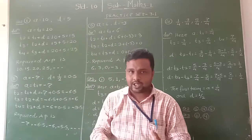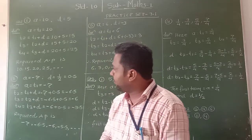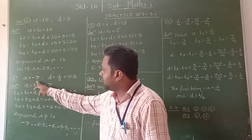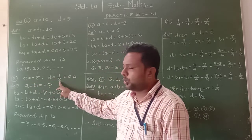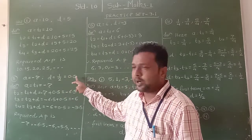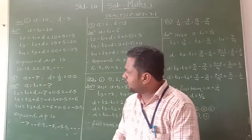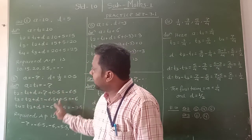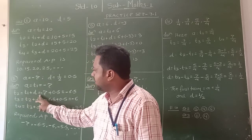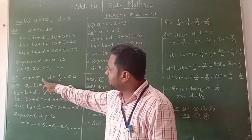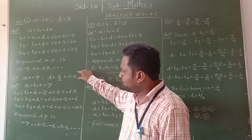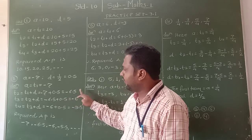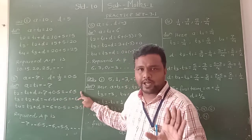Now we see the third example. In that, the first term A is equal to minus 7, and D is equal to 1 upon 2, which we can write in decimal form as 0.5. In the solution, the first term is minus 7. The second term is T1 plus D, which is minus 7 plus 0.5, equal to minus 6.5. That is the second term of the arithmetic progression.